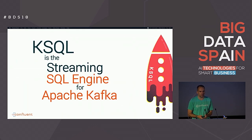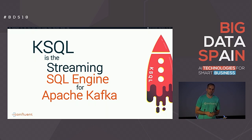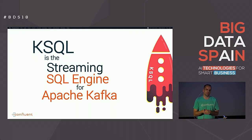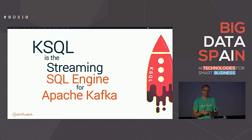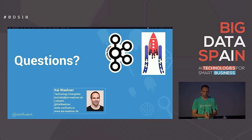KSQL is the streaming SQL engine for Kafka with many, many use cases. You can use it for repartitioning and technical transformations, for stateless continuous processing like filtering or transforming single events, or for stateful aggregations. As you saw with the UDF machine learning example, you can build very powerful things and deploy them to production. It's GA and ready for production even at large scale with millions of messages.